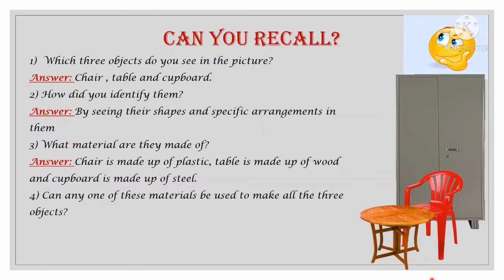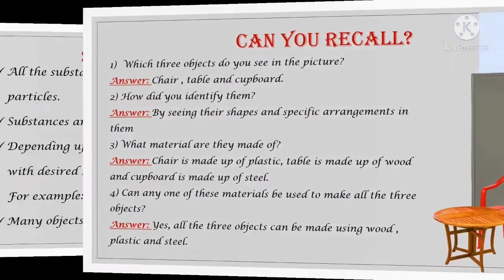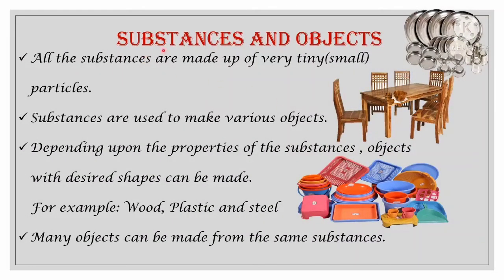Can any one of these materials be used to make all three objects? Yes, all three objects can be made using wood, plastic, and steel. Substances and objects: all substances are made up of very tiny, that is small, particles. Objects are made up of substances. Objects have a specific shape; their parts have a specific arrangement by which we identify them.